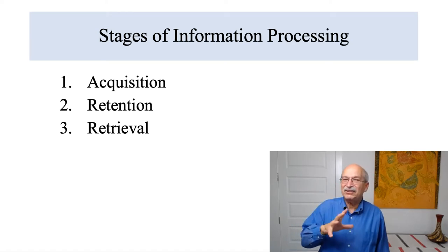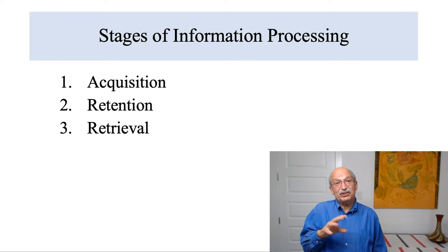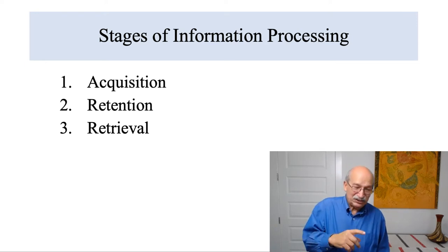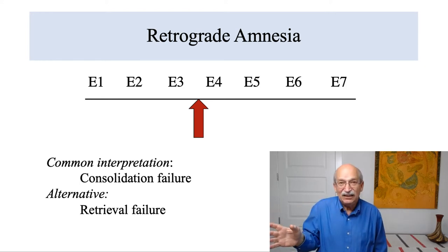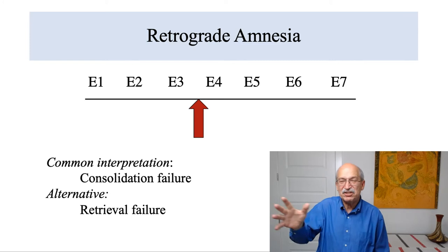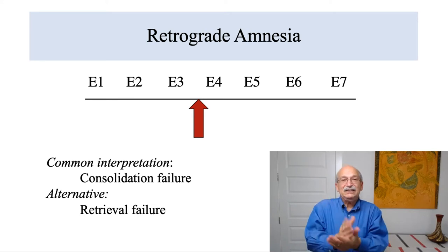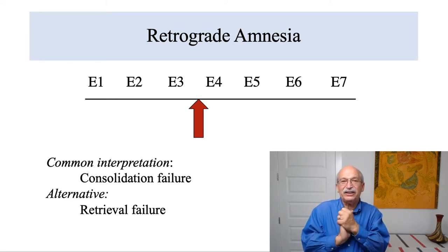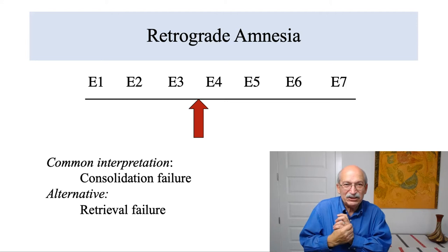To illustrate these issues, I'm going to talk about the effects on memory of having a brain concussion. A concussion results in what's called retrograde amnesia. The slide illustrates this phenomenon: E1 through E7 are symbols representing a sequence of events we experience during the course of our lives. The arrow indicates a point where you get a concussion — you're riding a motorcycle, get hit by a car, your head bounces on the pavement, and you have a severe concussion.